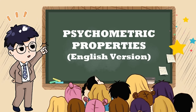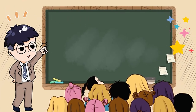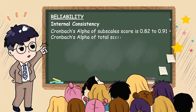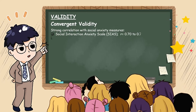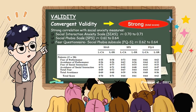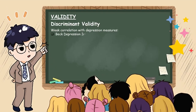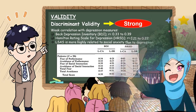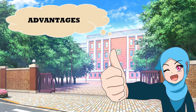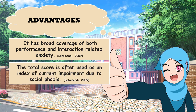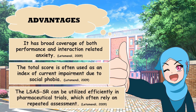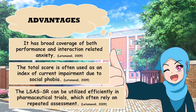For psychometric properties, we focus mainly on the original version. Reliability: the internal consistency indicates excellent. For validity, convergent validity indicates strong, and discriminant validity also indicates strong. Advantages: it has broad coverage for both performance and interaction-related anxiety. The total score is often used as an index of current impairment due to social phobia. The self-rated version can be utilized efficiently in pharmaceutical trials, which often rely on repeated assessment.